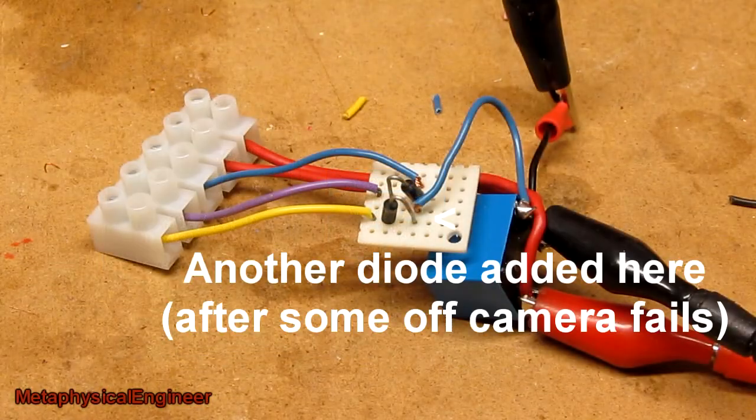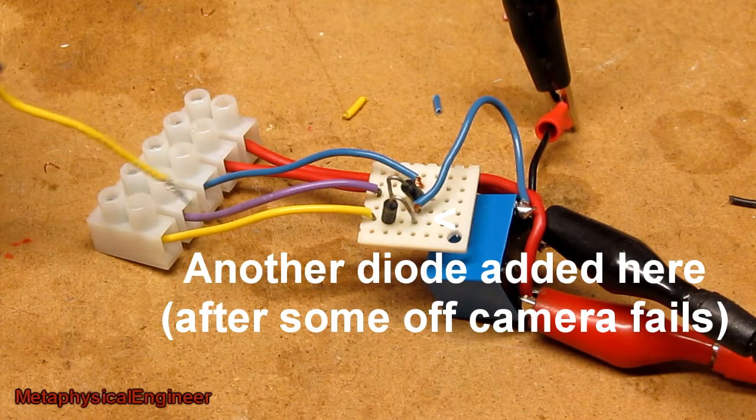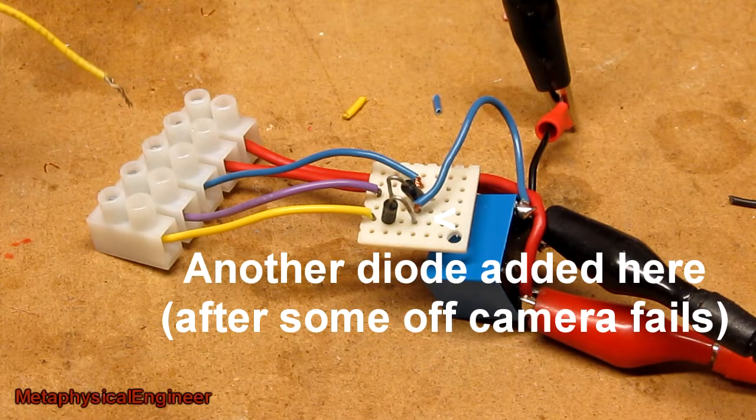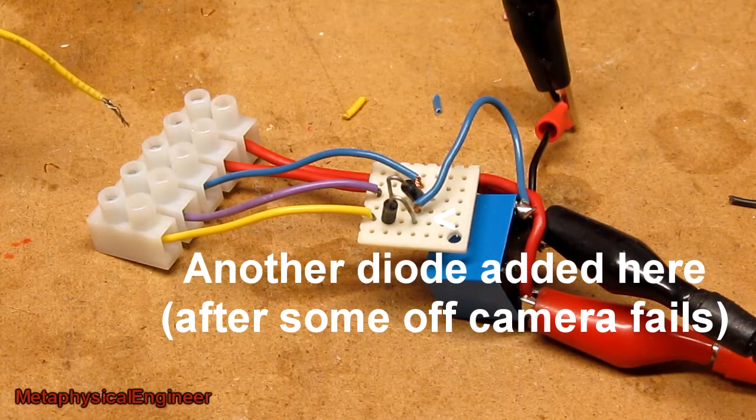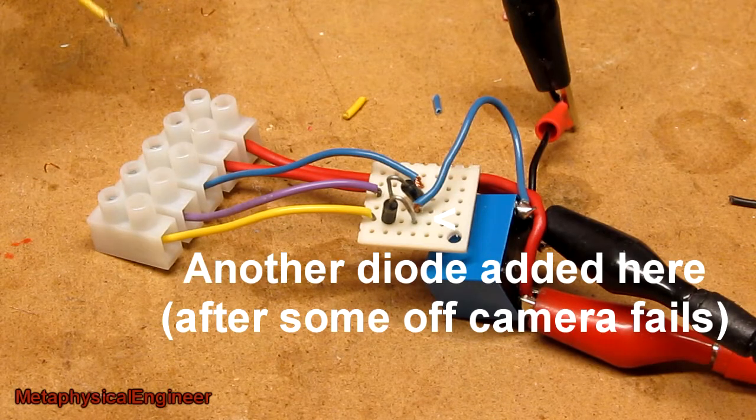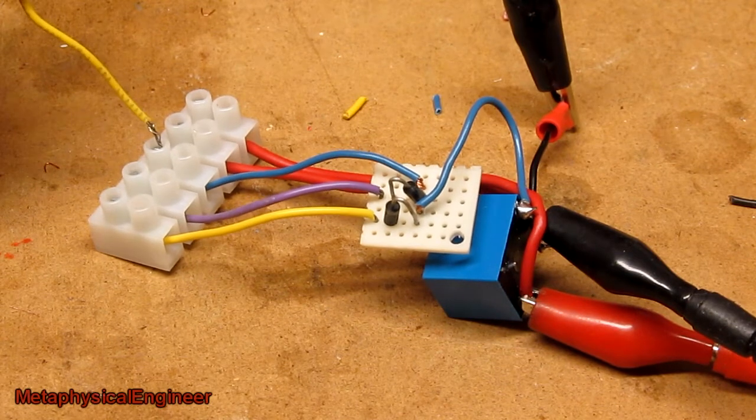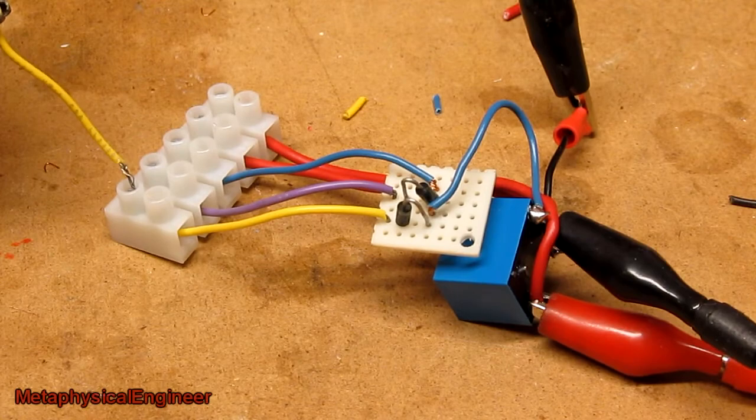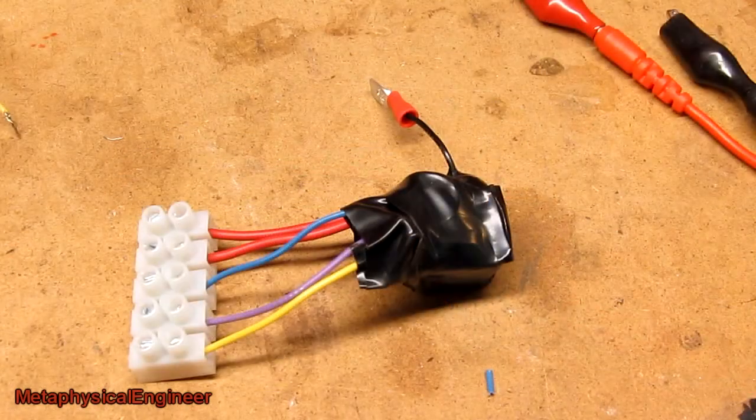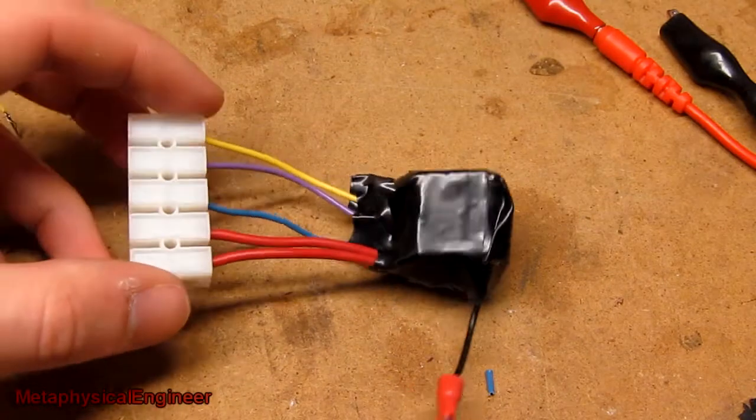Here's the relay module set up. Yellow and purple are the isolated inputs that cannot be back fed. Blue is a non-isolated that's going to come from the manual switch, which doesn't care about getting back fed, and all three will activate the relay, making my multimeter beep. There it is, all packaged up with tape. It's not pretty, but it's not going to short out on anything.